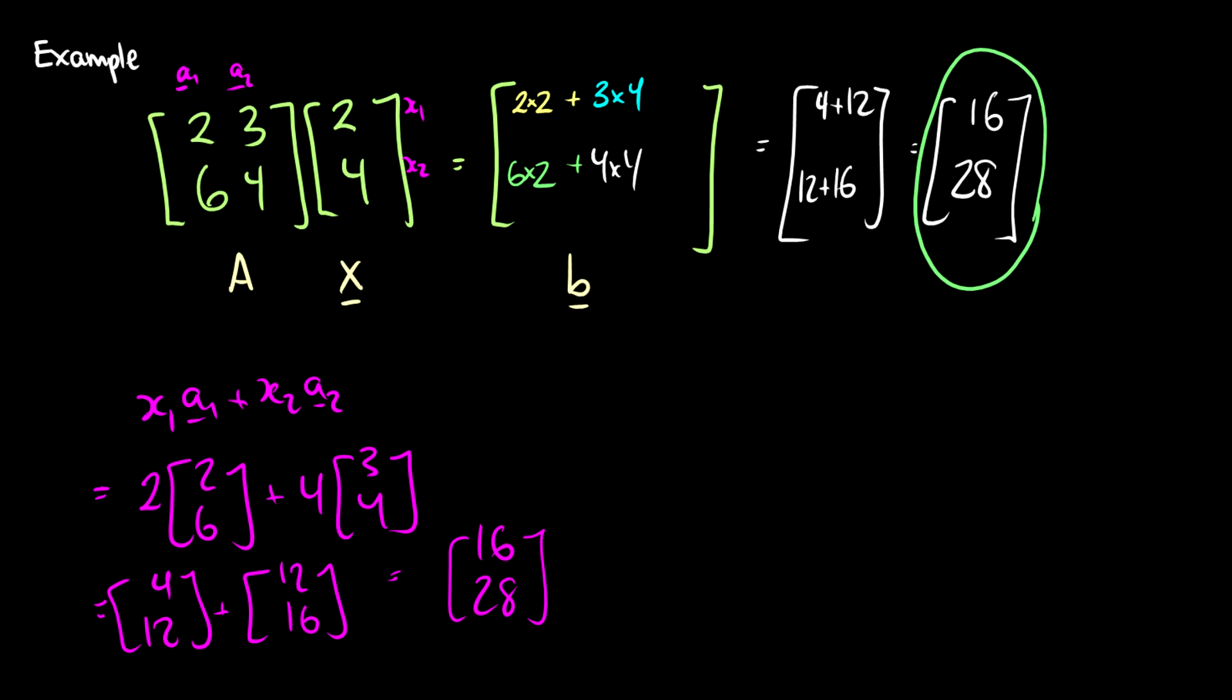Now you might be saying why learn this second method of using dot products? Well it's because when we do matrices times matrices - so we could have a11, a12, a21, a22 times another matrix with b11, b12, b21, and b22 - then things are not going to work as nicely. We can't do the same thing as x1*a1 plus x2*a2 because this is not a vector. So how would we do that? Well, we just use the dot product.